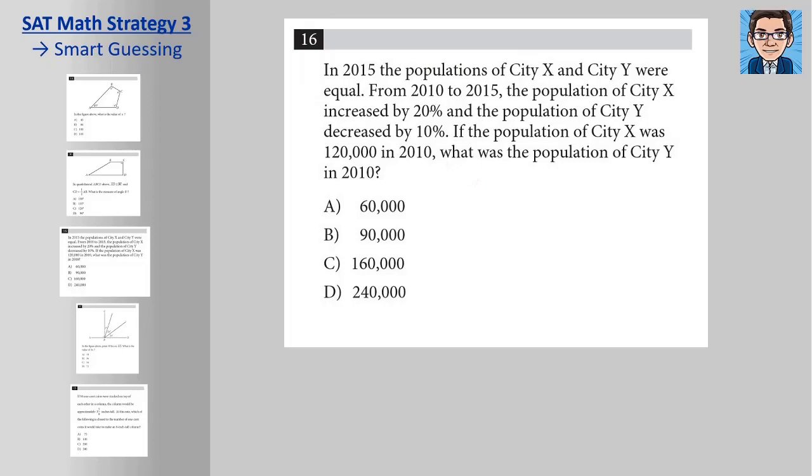Okay, in this problem, we've got populations going from 2010 to 2015. And they're the same in 2015. And it's telling us that one of them starts in 2010 at 120,000, and is going up by 20%. And then the other one is going down by 10%. And they end up being the same over here. Okay, so if 120,000 is going up and getting us somewhere, then if we had anything less than 120 going down, they would never be the same over here. So anything less than 120,000 does not make sense.